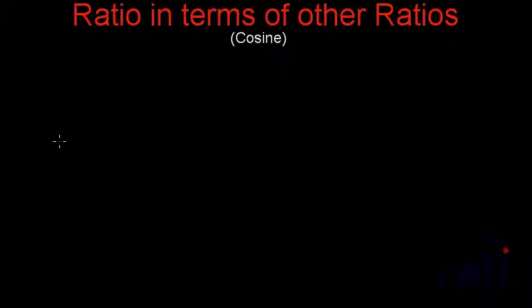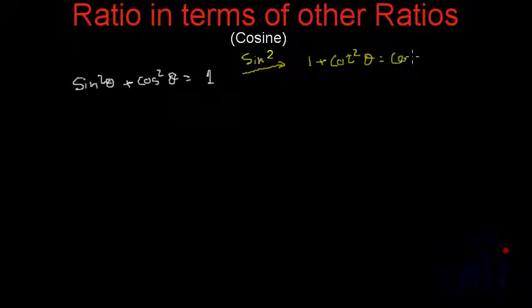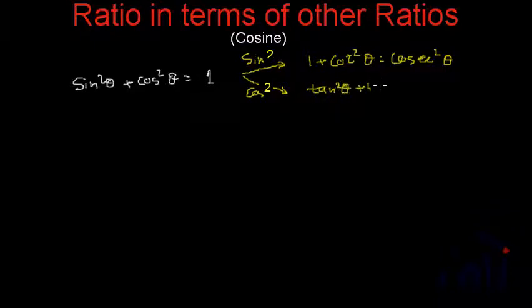The basis for all these conversions will be the identity: sine squared theta plus cos squared theta is equal to 1. When we divide it by sine squared, we get 1 plus cot squared theta is equal to cosec squared theta. And when we divide it by cos squared, we get tan squared theta plus 1 is equal to sec squared theta. So these are the identities which we are going to use.